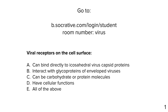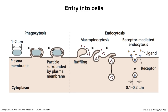First question: Viral receptors on the cell surface — A) can bind directly to icosahedral virus capsid proteins; B) interact with glycoproteins of envelope viruses; C) can be carbohydrate or protein molecules; D) have cellular functions; E) all of the above. 95% answered 'all of the above,' which is correct. They can bind to capsid proteins, to glycoproteins, they can be carbohydrates or proteins, and they have cellular functions.